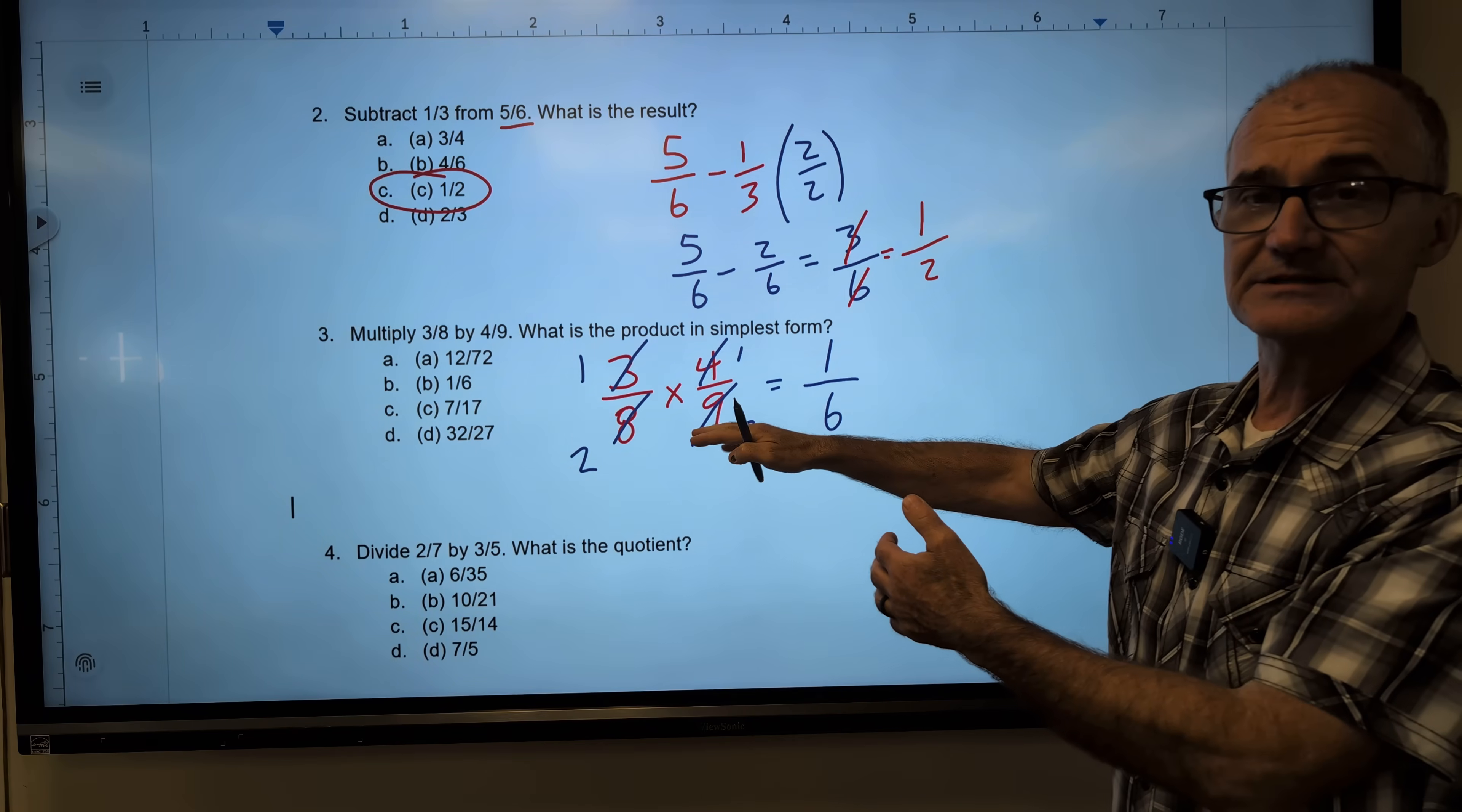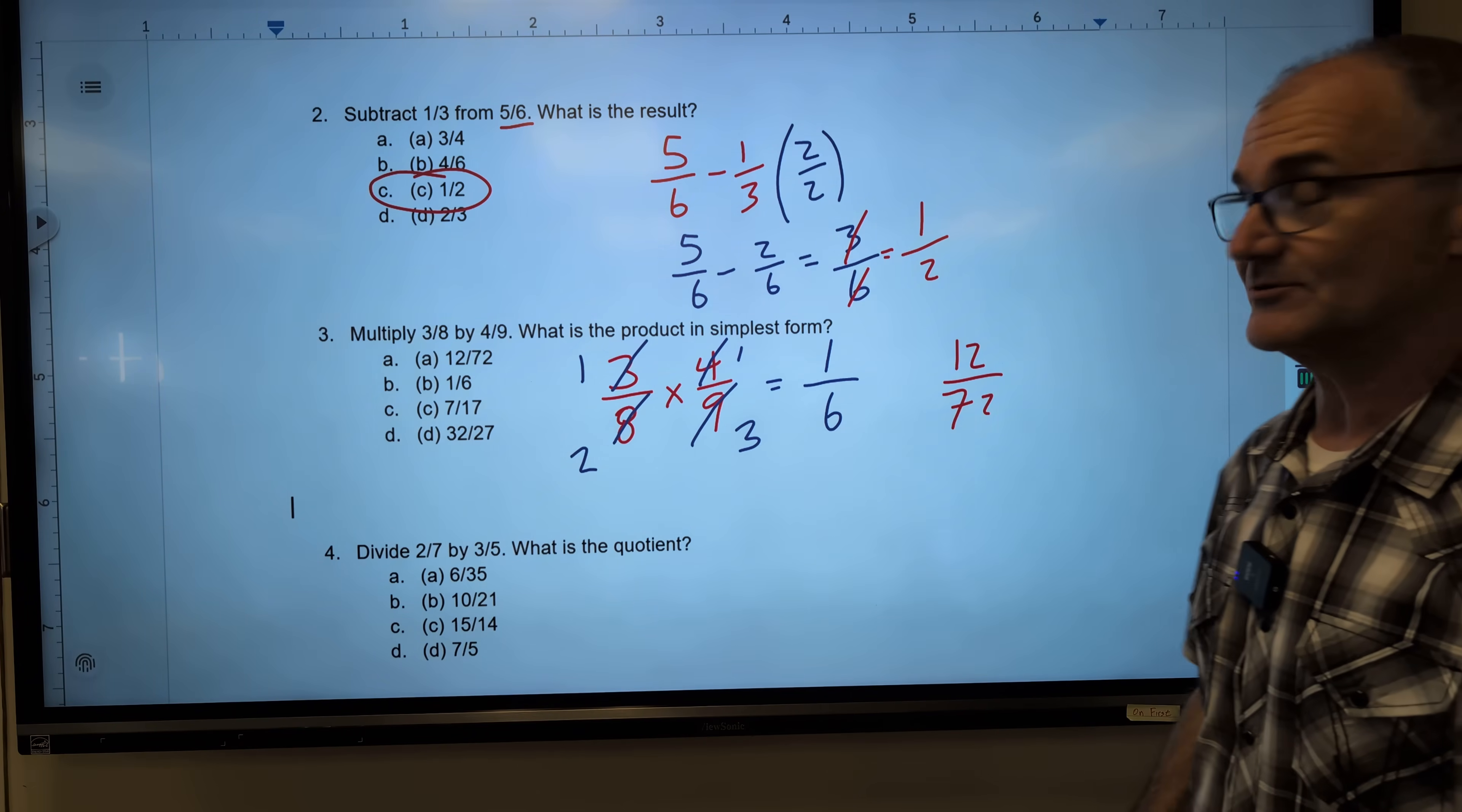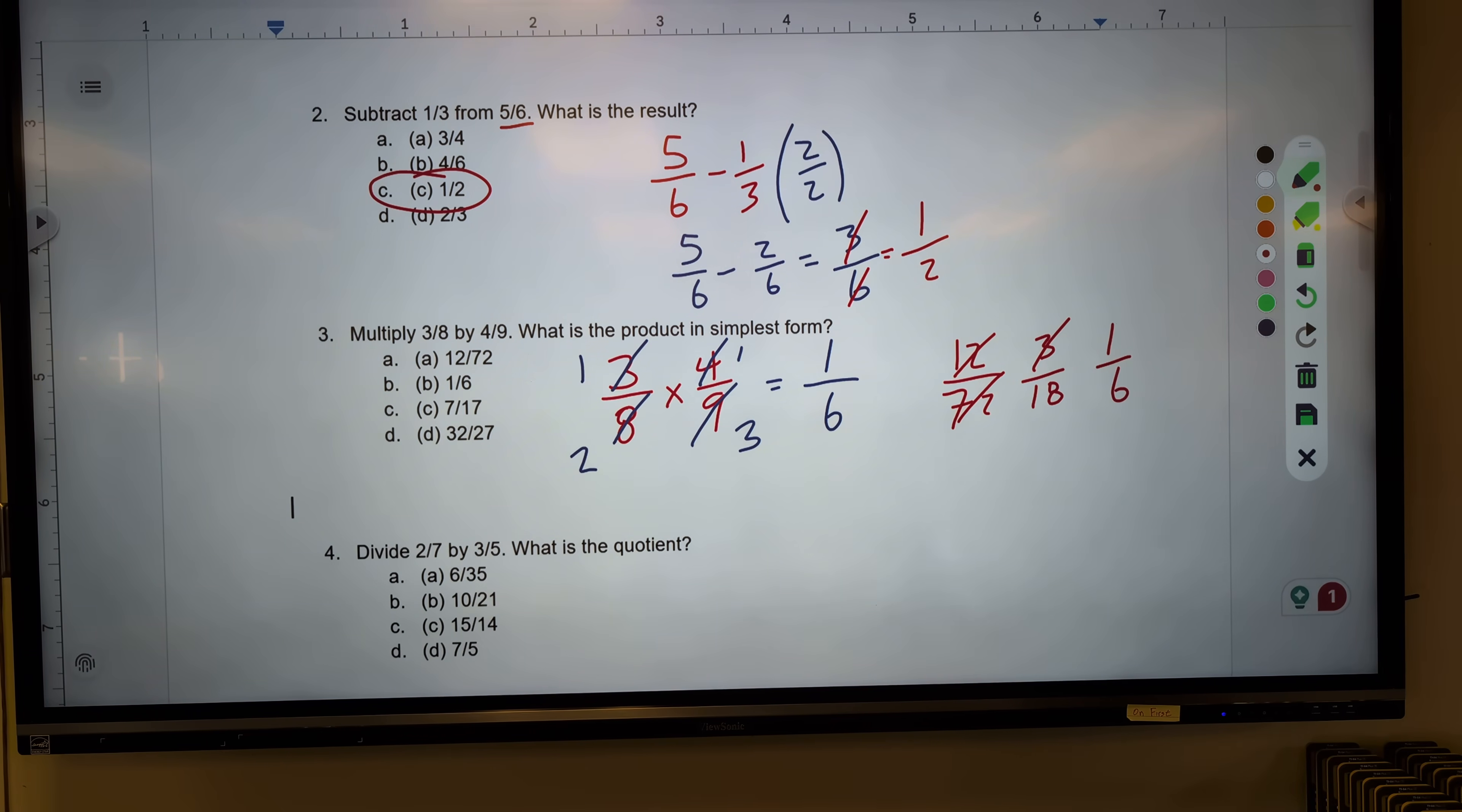I don't have to do that reducing before, I could do it afterwards. If I were to do that, I would do three times four, 12. Eight times nine, 72. And you could see that's one of the answers. It is a correct answer, but it is not in simplest form. So now I'm looking for numbers that go into here and into here. Four will go into here three times. Four goes into here 18 times. Then three goes into here one time. Three goes into here six times, giving me the same reduced fraction.